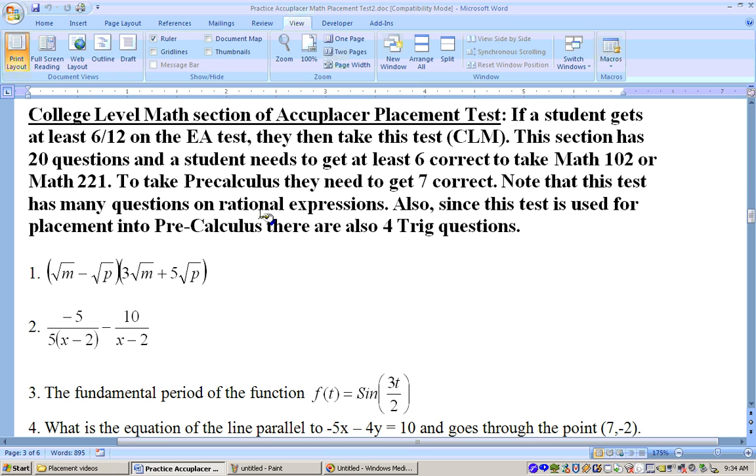Okay, assuming you got about 6 out of 12 on the last section, the EA elementary algebra section of the test, then you'll be able to go up to this section of the test, college-level math section, which will determine if you need to take Math 93, the highest-level developmental course, or if you can go ahead and go into college-level math courses such as Math 102 or Precalculus and so on.